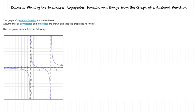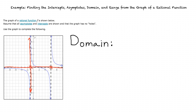Next, we're asked to find the domain and range of the function f. The domain refers to all the x values that we can use as inputs into our function to return a defined output. This graph shows that for any x value there is a defined y value, except at our vertical asymptotes. At these values, there is no defined output, so these values are not in the domain.